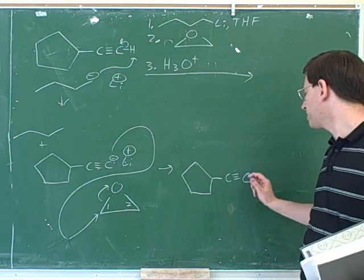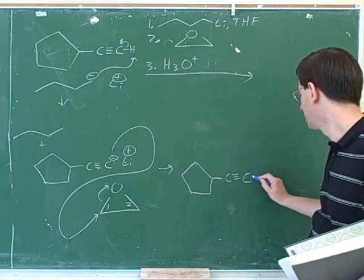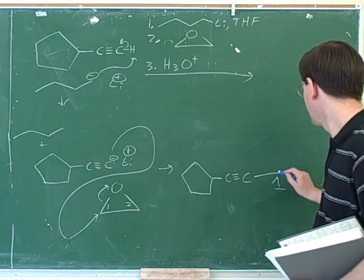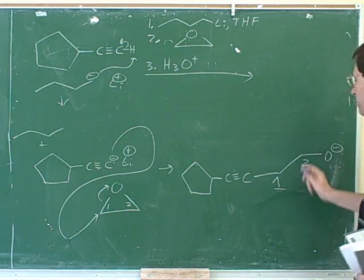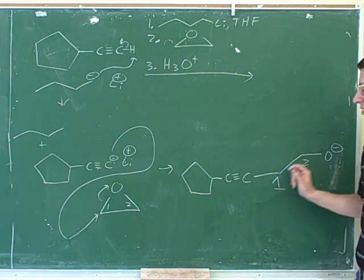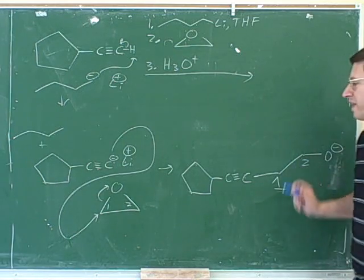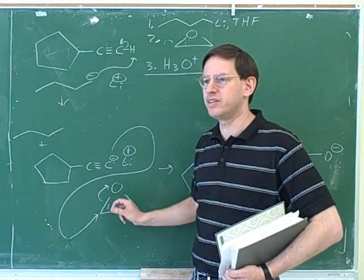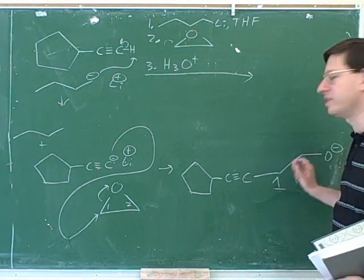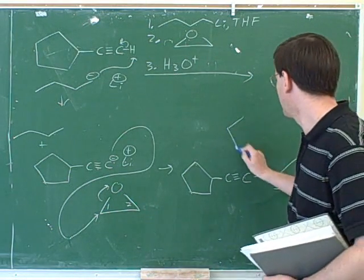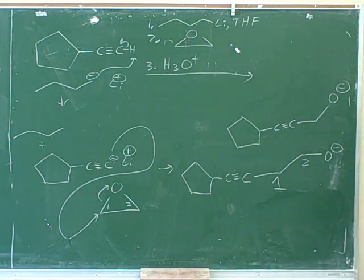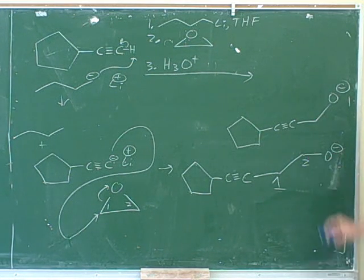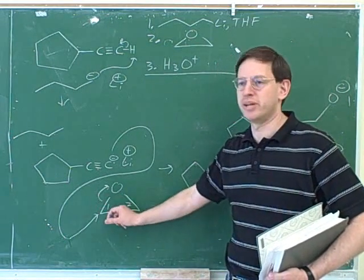Let's do this step by step. Who is this alkyne carbon connected to? One. And who is number one connected to? Two. And who is number two connected to? Some of you left out one of these carbons — you should check your pictures. The reason you left them out was because you didn't put in these numbers. If you put in these two numbers, it's clear that we need two separate carbons. Some of you may have just written one carbon, but that's wrong because we need both number one and number two.